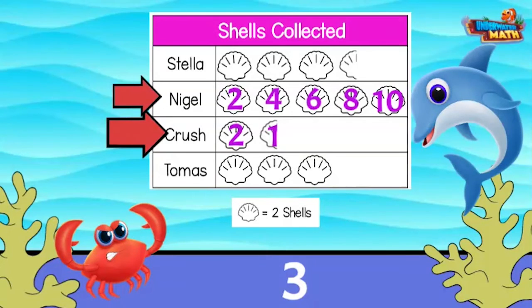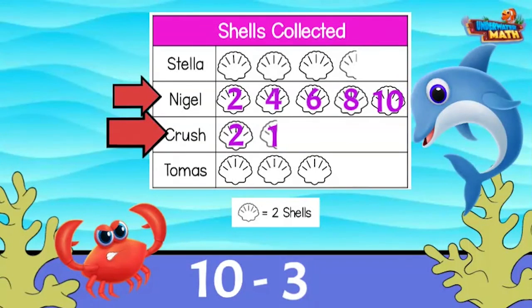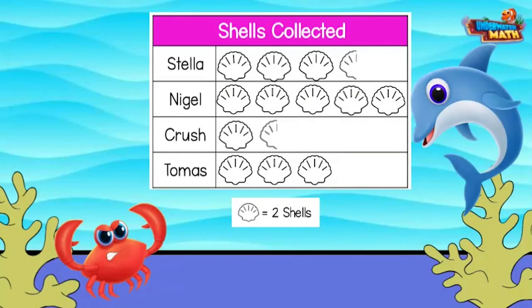We wanted to know the difference, which means we need to subtract the two numbers. Ten minus three equals seven. Nigel found seven more shells than you did!